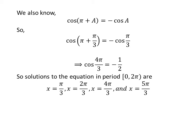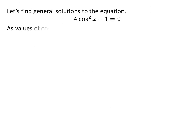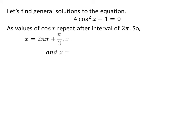So the solutions to the equation 4 times square of cosine of x minus 1 is equal to 0 in the interval 0 to 2 times pi are: pi upon 3, 2 times pi upon 3, 4 times pi upon 3, and 5 times pi upon 3.